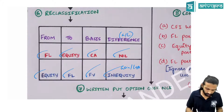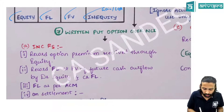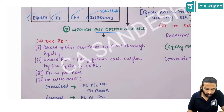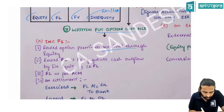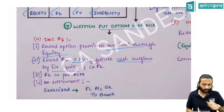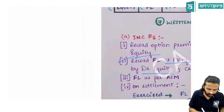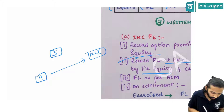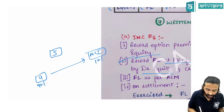For a written put option over non-controlling interest: if any premium is received, it is recorded through equity. In the consolidated financial statements, there is an obligation — so a financial liability must be recorded. The entry is: debit equity account, credit financial liability at present value of cash outflow. If a holding company owns 90% and NCI holds 10%, and a put option is written to NCI, the group perspective creates an obligation.